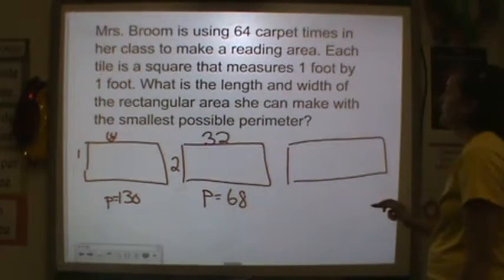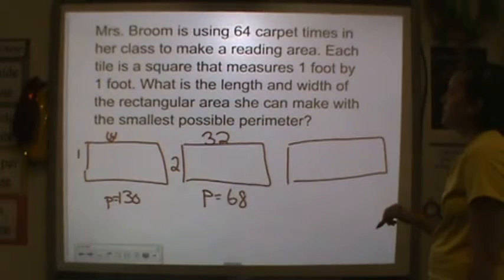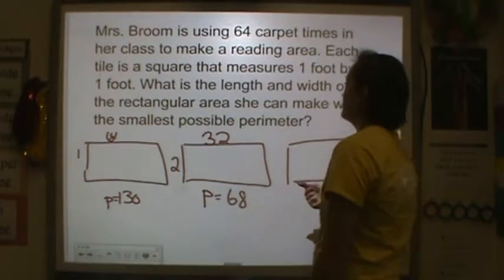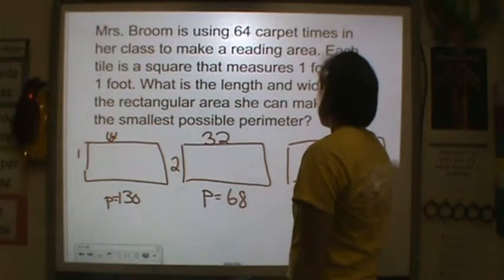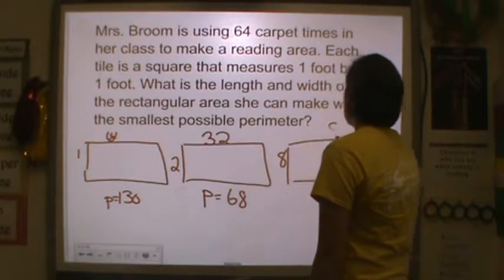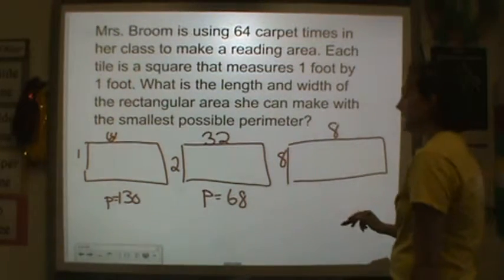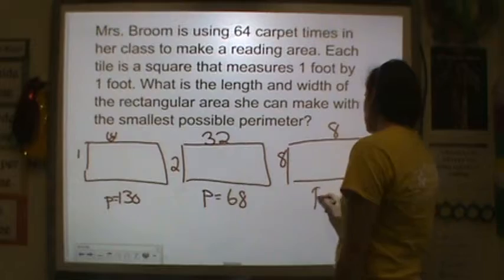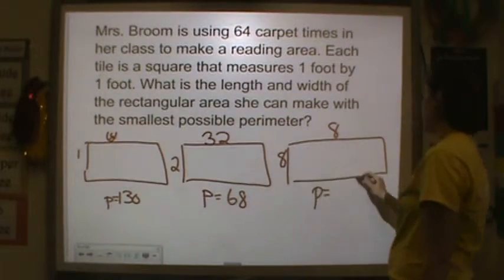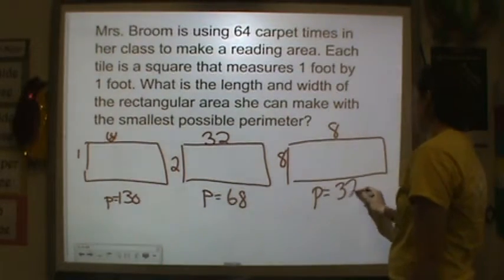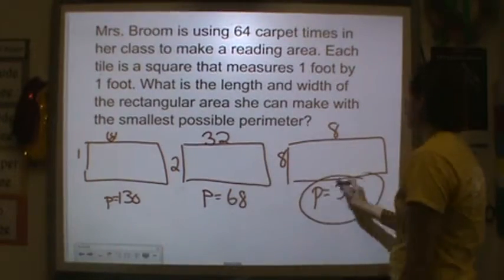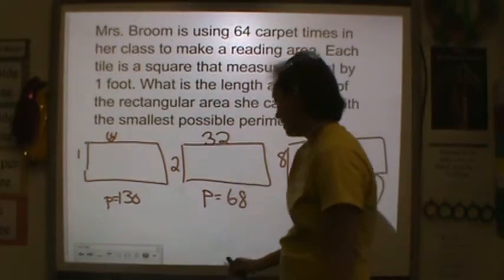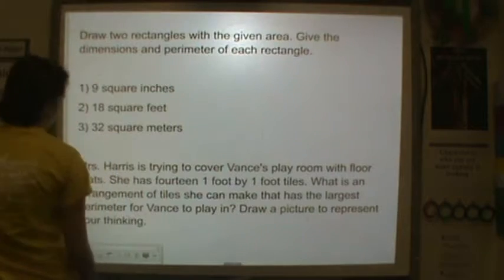Let's try another one. Another factor. Let's see. It won't divide by 4 evenly. Won't divide by 6 evenly. It'll divide by 8 evenly. So 8 by 8. Well, 8 times 8 is 64. The perimeter here would be 8 times 4. 8, 8, 8, 8 will be 32. So this would be the smallest perimeter that she could use.